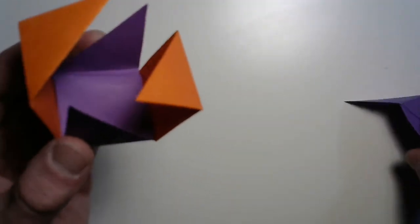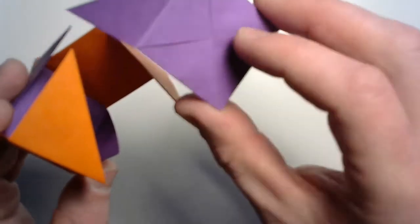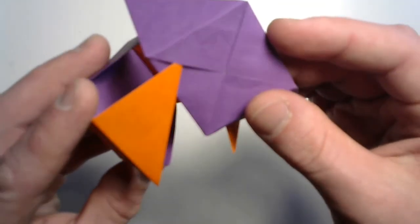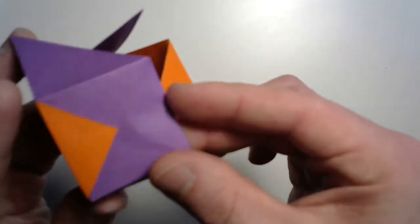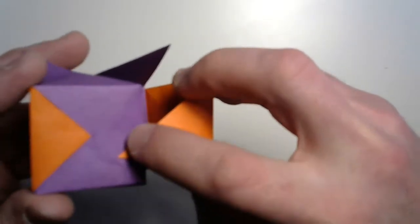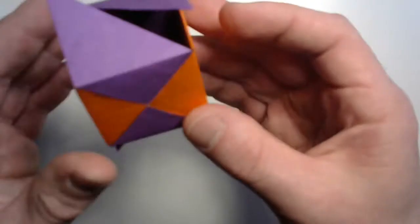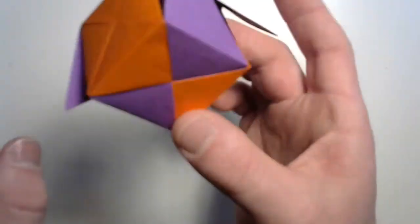Why don't we do the opposite face next? I'm going to take another Sonobe unit. I'm going to insert right into the pocket there and on this side the same thing. And there's another face. Check that out.